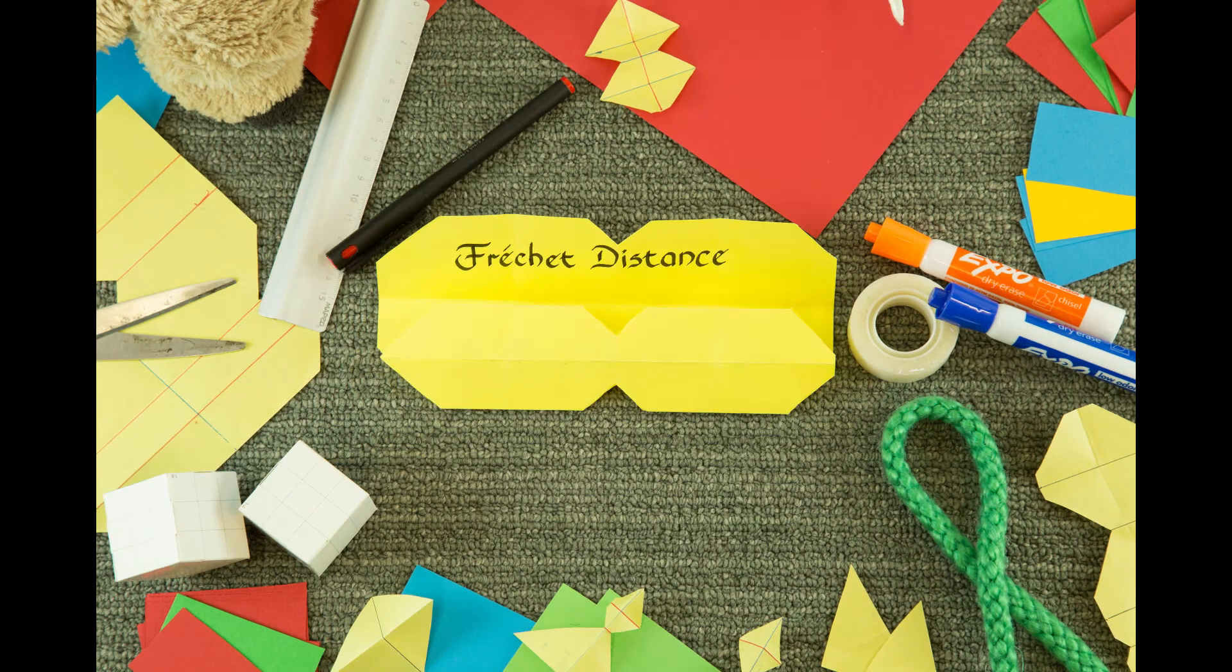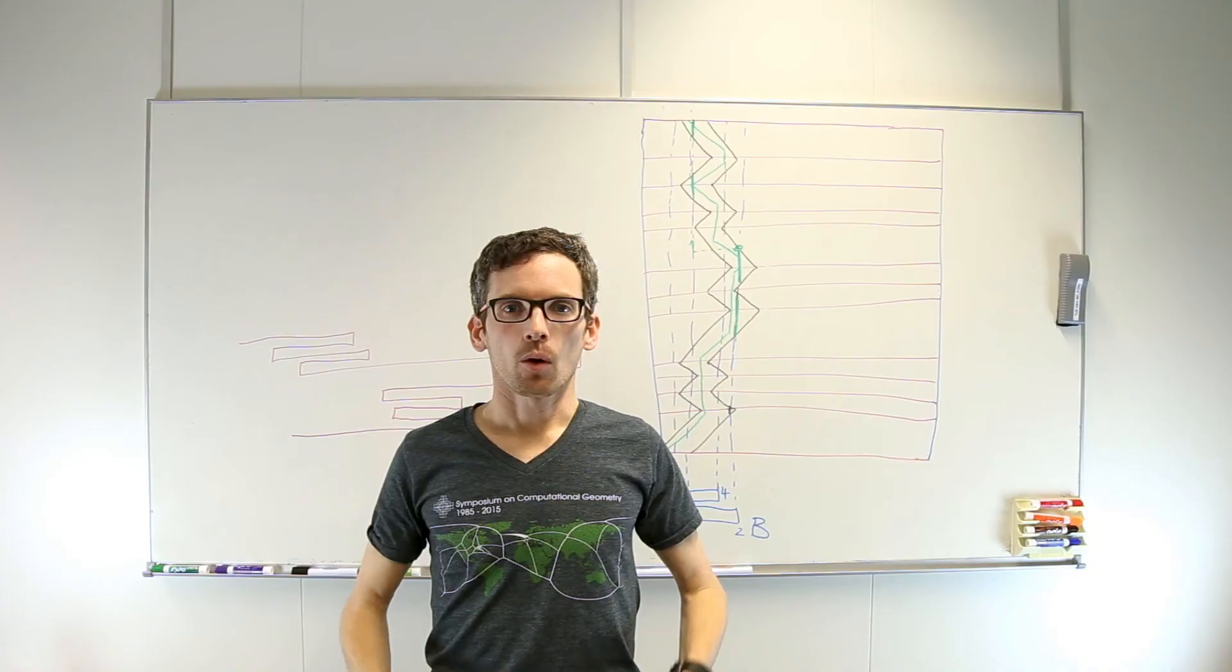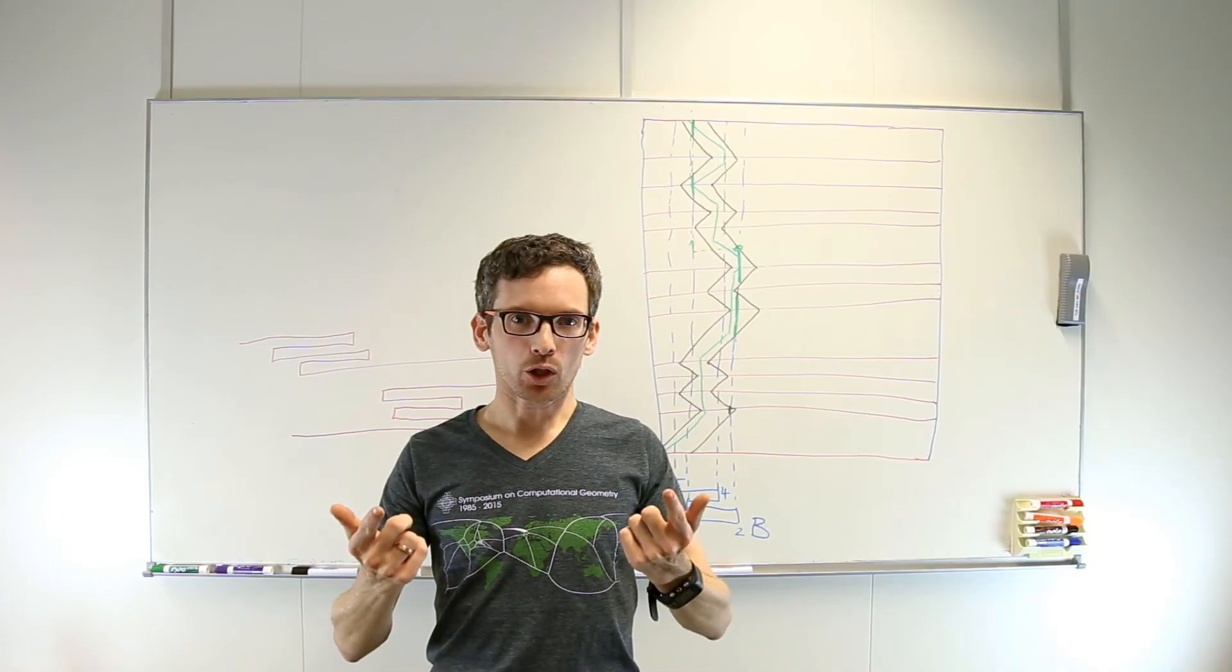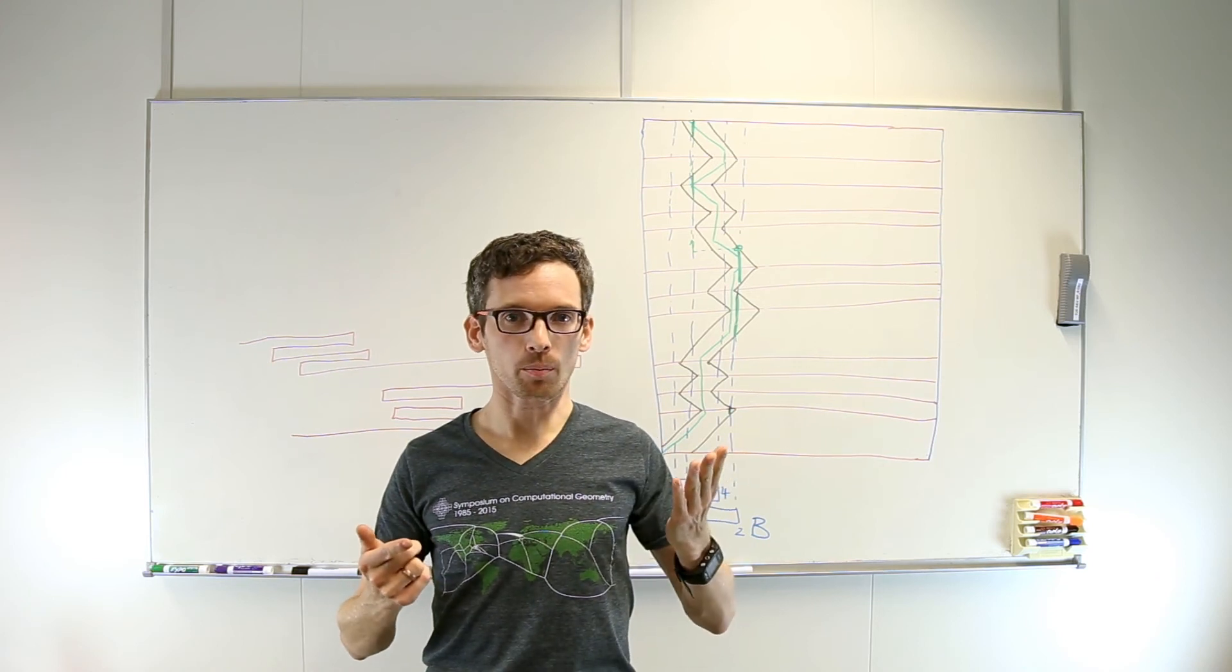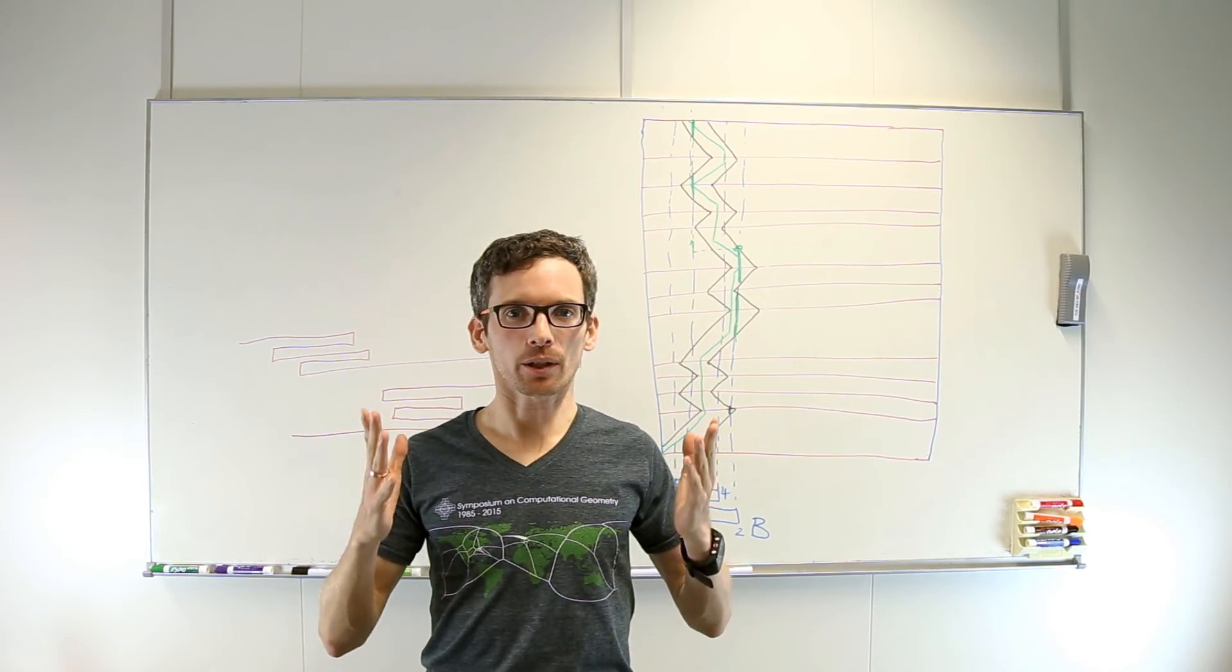So once again, what was this about? We have shown that deciding whether the Fréchet distance is smaller than delta for two one-dimensional curves, one of which has bounded ply, can be done faster than in quadratic time.